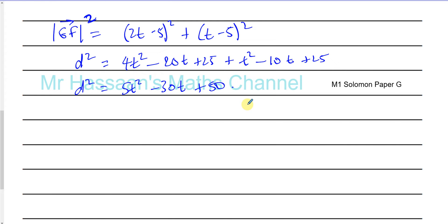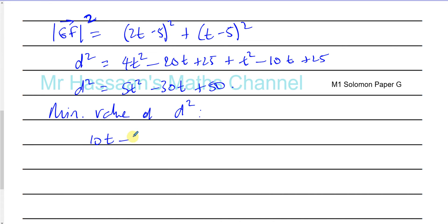So instead of using a square root and making everything complicated, we find the minimum of 5t² minus 30t plus 50. We can do it by differentiating: 10t minus 30 equals 0. We know it's a minimum because it's a quadratic that opens upwards. So 10t equals 30, therefore t equals 3 seconds — that's the time when they have the minimum distance between them.